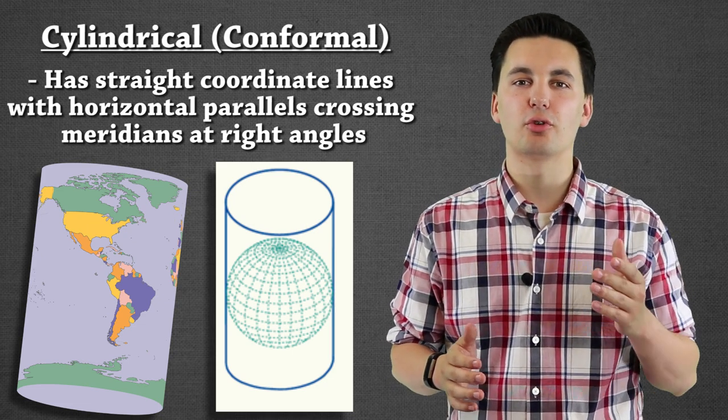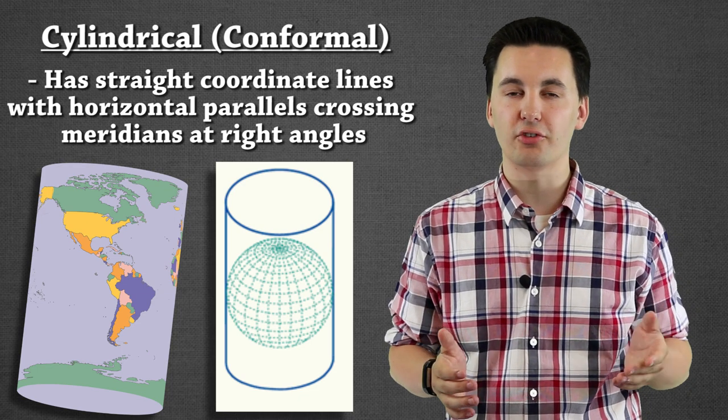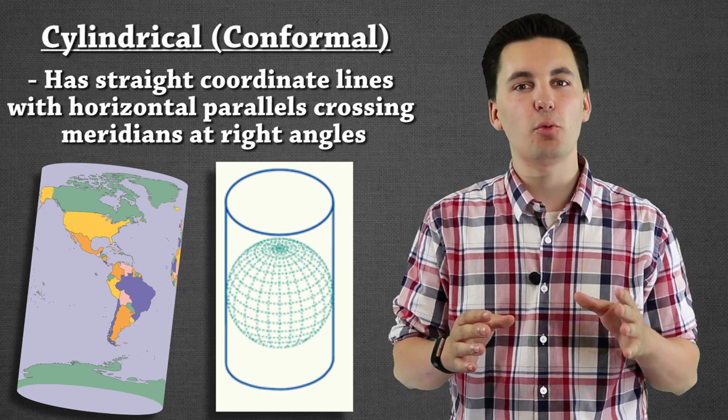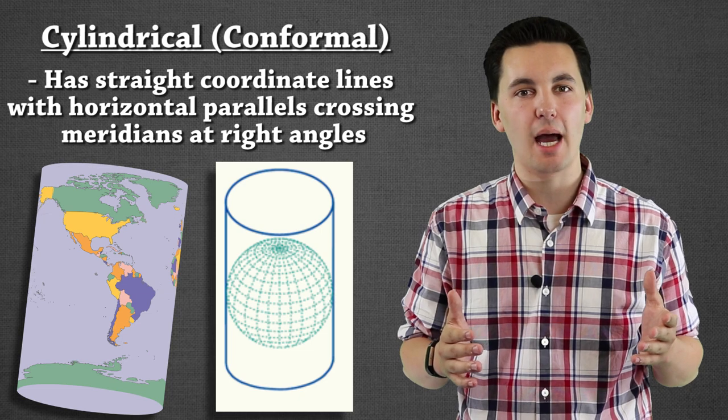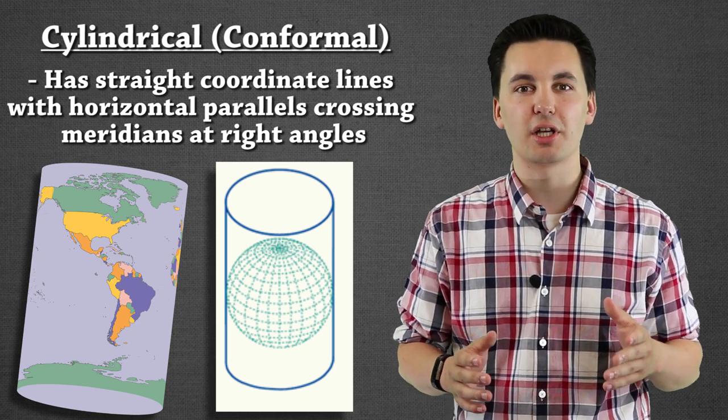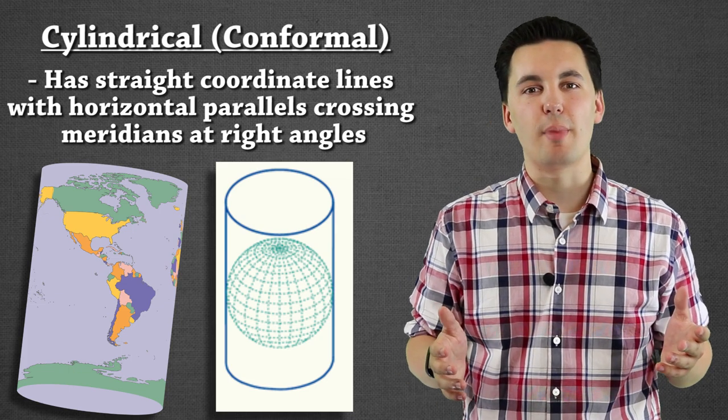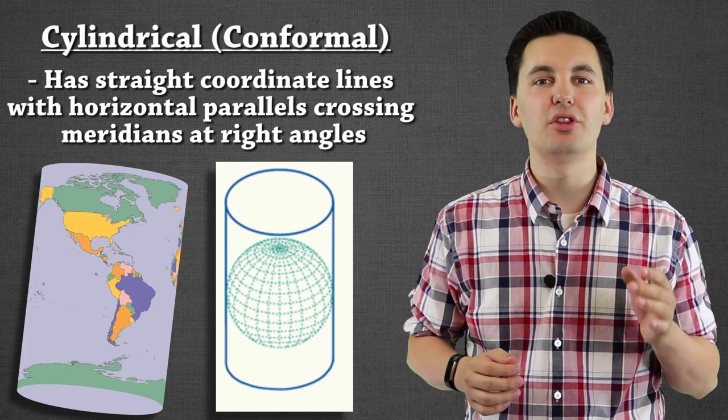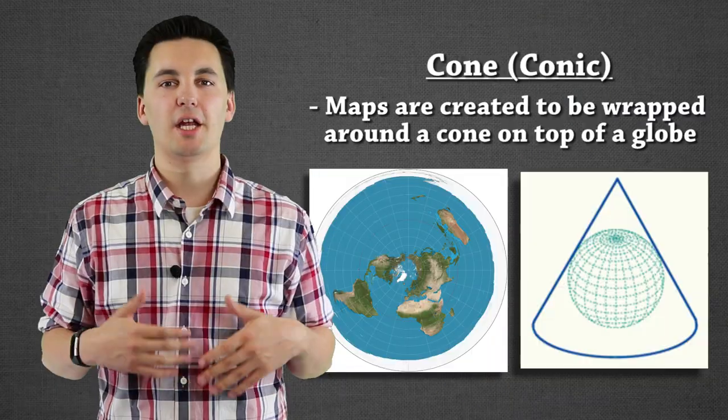However, we're going to see direction work really well, it's going to be pretty accurate here. And that's why most of the time we're going to see these maps actually be used for navigation. And this is the one that makes the most sense when it comes to mathematics. An example of a map that would fit this developable surface would be the Mercator map projection.